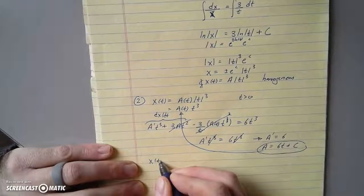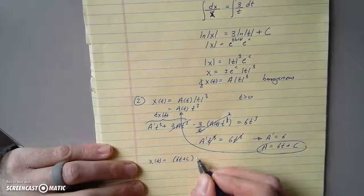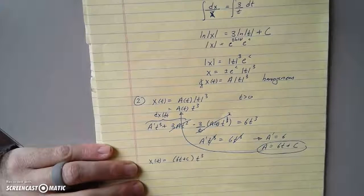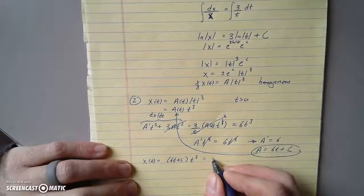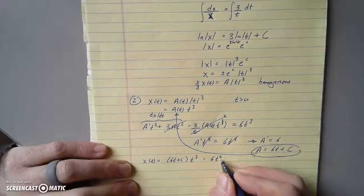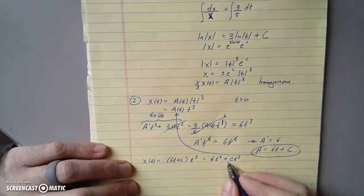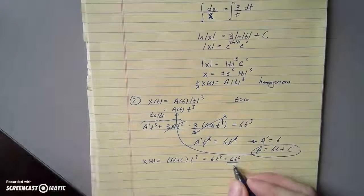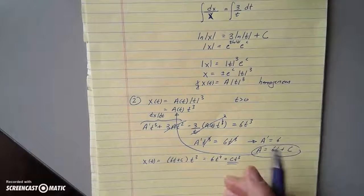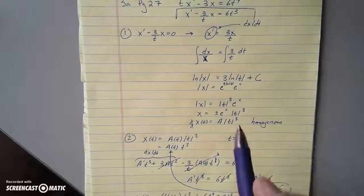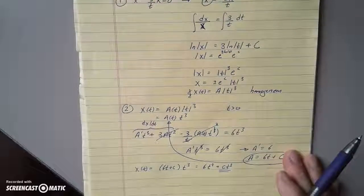The idea is that x(t) = (6t + c)t^3. And probably something worth thinking about here is, you know, look at what happens. This is 6t^4 + ct^3. This is the solution to the homogeneous equation. So this is the extra bit that allows us to satisfy the non-homogeneous term.